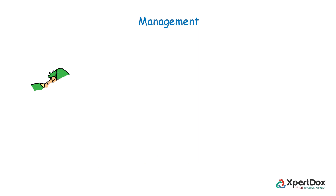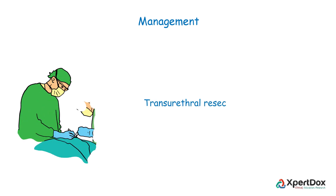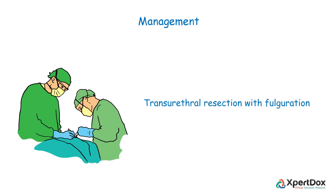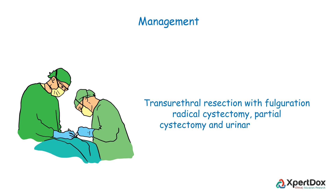Surgical treatment options include transurethral resection with fulguration, radical cystectomy, partial cystectomy, and urinary diversion.